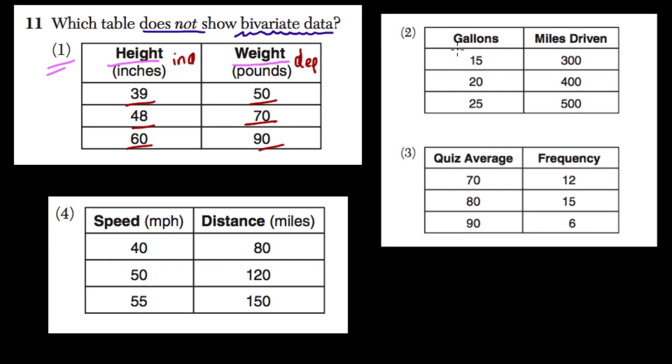In the second table over here, we have the gallons and the miles driven. Well, here this is kind of reversed. Because the miles that you want to drive depend on the amount of gas you're able to buy.